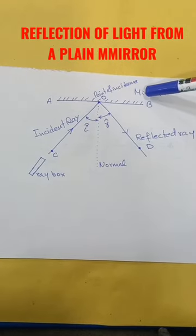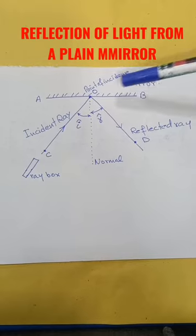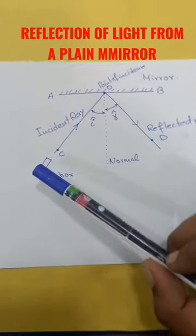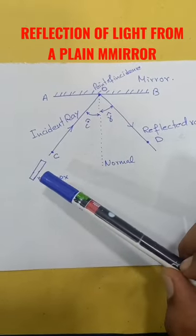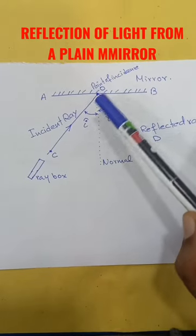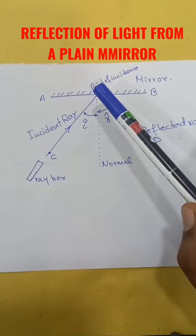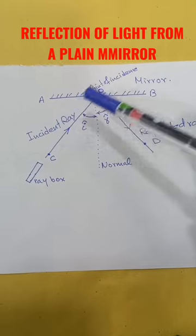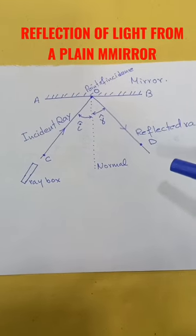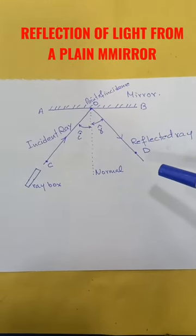This is a mirror AB, and here we have a ray box. With the help of this, I have directed a light ray onto the reflecting surface of the mirror from the point O. The light has reflected.